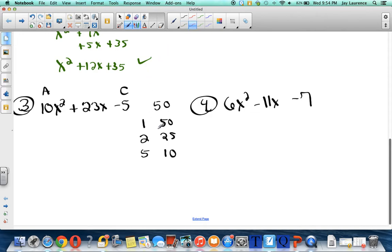So I need two of these factors of 50 that are going to subtract to get positive 23. So could I do 50 minus 1? Well I could, but it won't equal 23. How about 5 minus 10? That's not 23. How about 25 minus 2? 25 minus 2, yeah, that's the ticket right there.